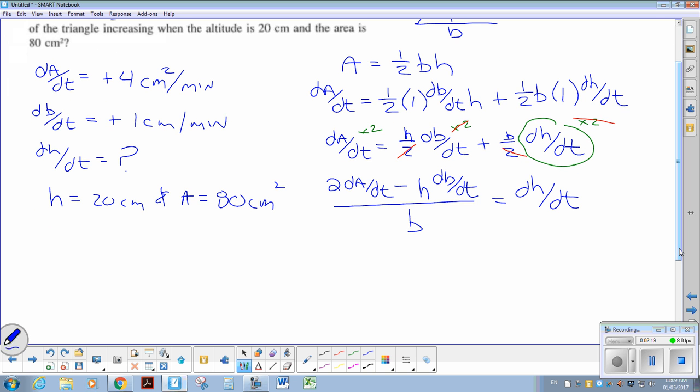So what do I know? I know the change in area, I know the change of the base, I know h. So we're going to find b at that point. Therefore, area equals one-half base times height. Area is 80, one-half b times 20. So that would reduce down to a 10. So b is going to be 8 centimeters.